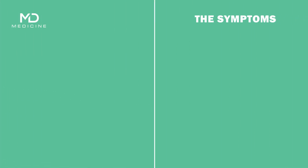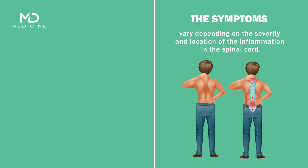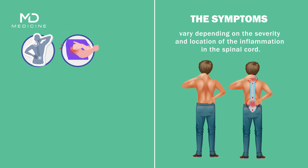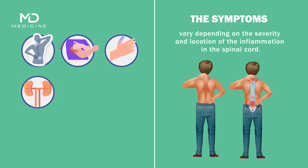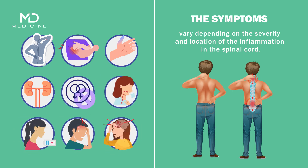The symptoms of transverse myelitis can vary depending on the severity and location of the inflammation in the spinal cord. Some common symptoms include pain in the back, neck, or limbs, weakness or paralysis in the arms or legs, loss of sensation or numbness in the limbs, bladder or bowel dysfunction, sexual dysfunction, difficulty breathing, fatigue, fever, and headache.